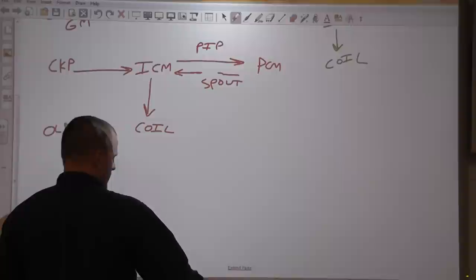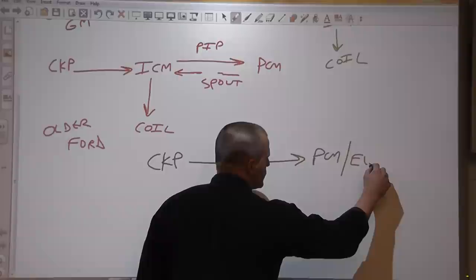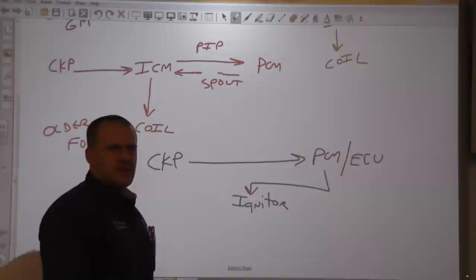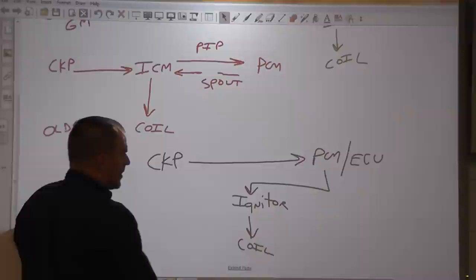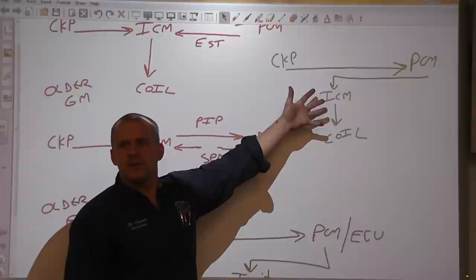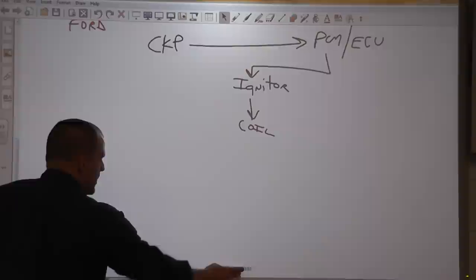Another design — typical Asian and European market: crank signal goes to the PCM or ECU, then to a component called an igniter, which is essentially the same as a module, and then to the coil. The Asian and European markets have been doing it this way for a long time. Now newer domestic designs — GM and Ford — are doing it the same way. Chrysler has been unique from the start — crank signal into the PCM, PCM controls the coil directly.